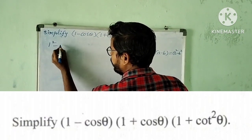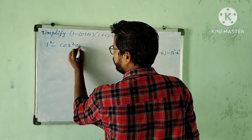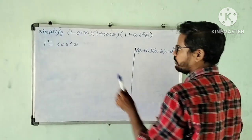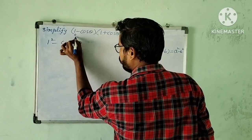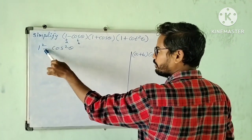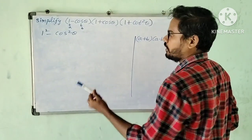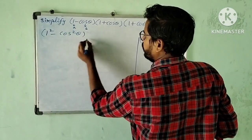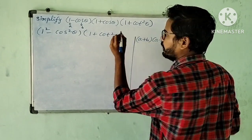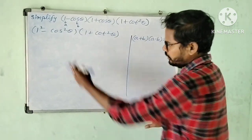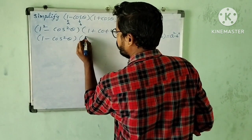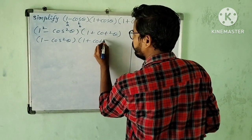So you will get 1 squared minus cos theta squared. Here, a is equal to 1 and b is equal to cos theta. Then we get 1 squared minus cos squared theta, multiplied by 1 plus cos squared theta. So 1 squared is 1, giving 1 minus cos squared theta into 1 plus cos squared theta.